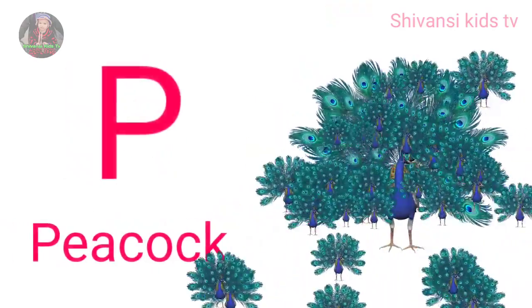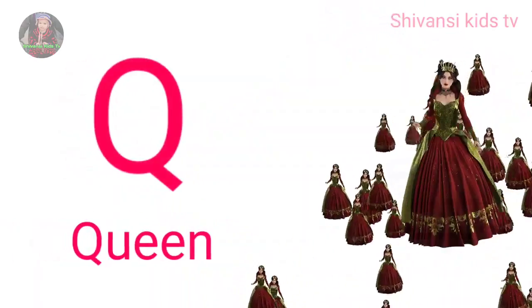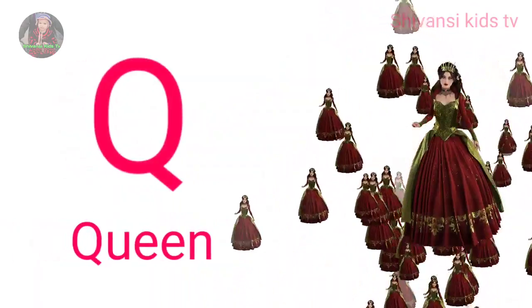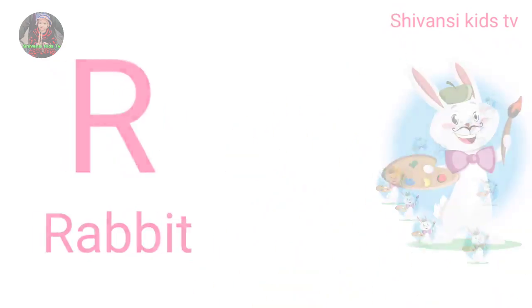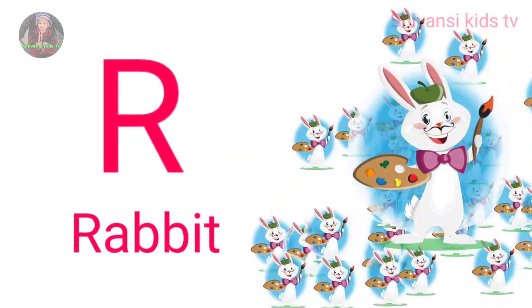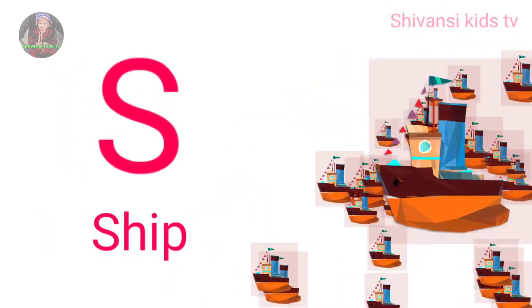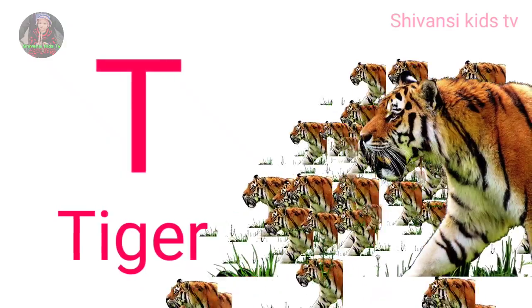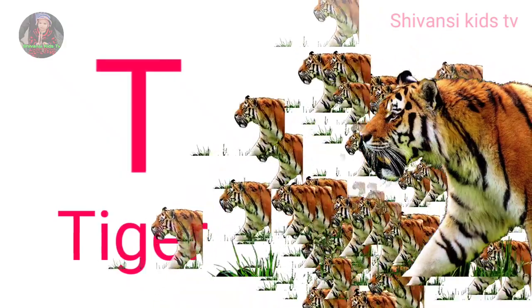P for peacock, Q for queen, R for rabbit, S for sheep, T for tiger.